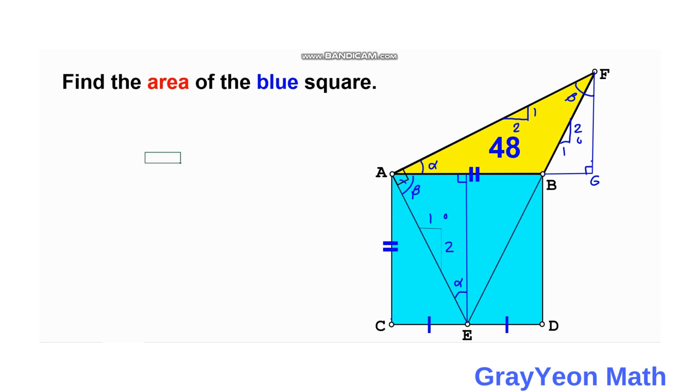With these ratios, we can represent BG as x. Then FG is 2x. And since this is also 2 to 1, AG should be twice FG, so this becomes 4x. The total is 4x for AG, but you need to subtract this x, so we have 3x for AB.